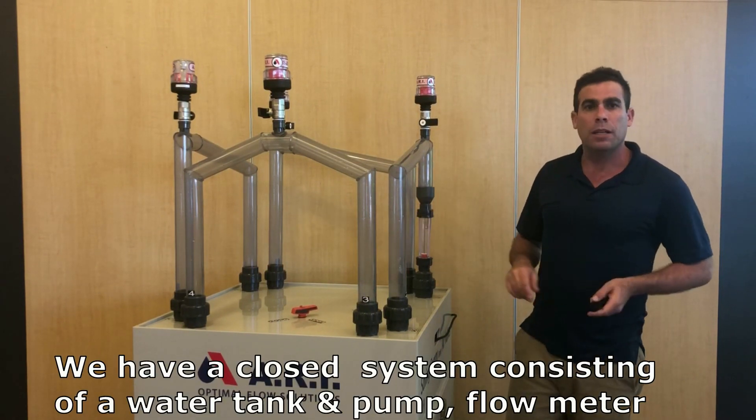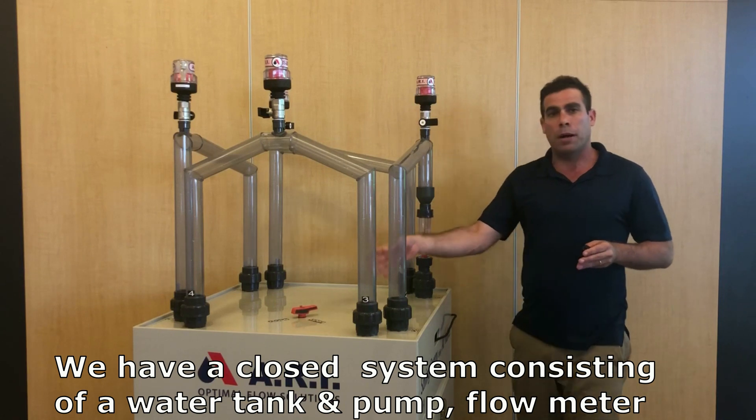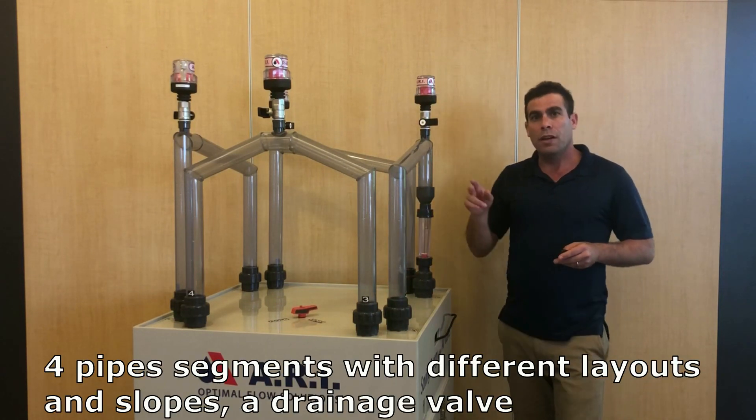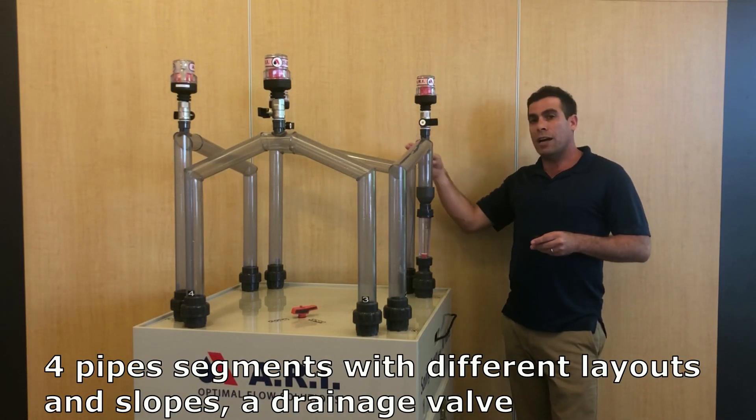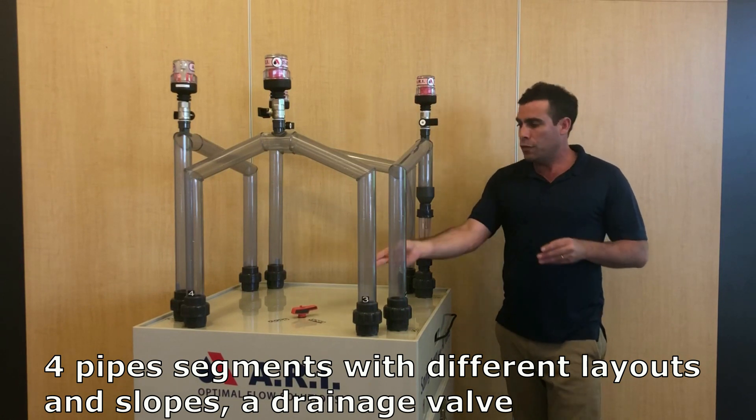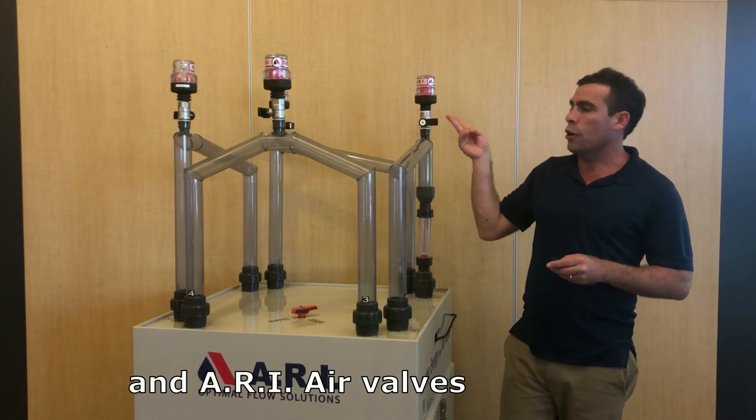We have a closed system consisting of a water tank and pump, a flow meter, four pipe segments with different layouts and slopes, a drainage valve, and ARI air valves.